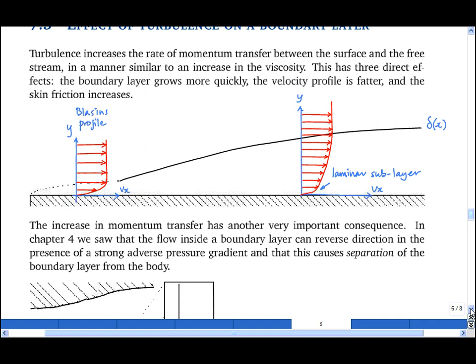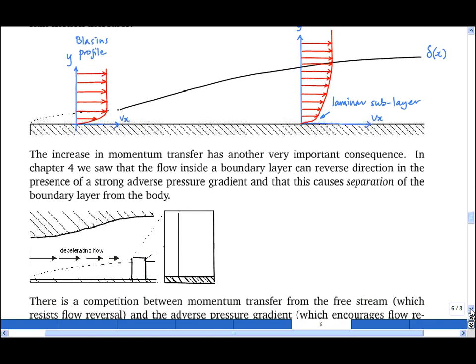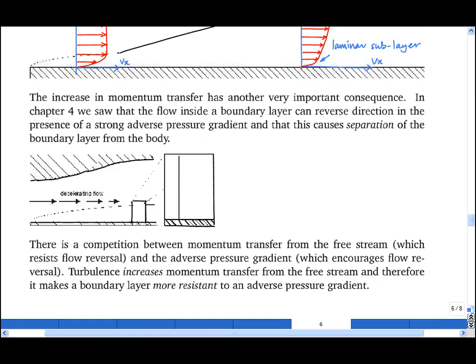As well as increasing the rate of growth of the boundary layer thickness, this increase in momentum transfer has another very important consequence. In chapter 4, we saw that the flow inside a boundary layer can reverse direction when there is a strong adverse pressure gradient, i.e. when the flow is moving from a region of low pressure to a region of high pressure.